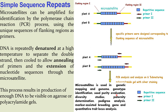The applications of simple sequence repeat or microsatellite markers include: genetic mapping or genotyping, genotype identification, seed purity evaluation, diversity study, paternity determination, pedigree analysis, marker-assisted breeding, and gene and quantitative trait locus (QTL) analysis.